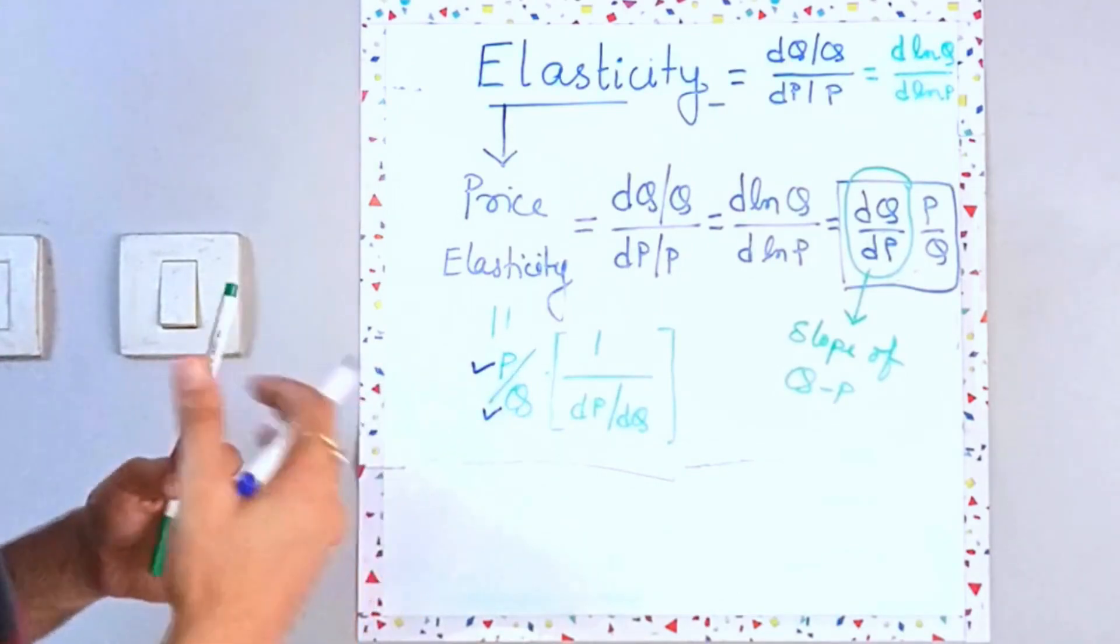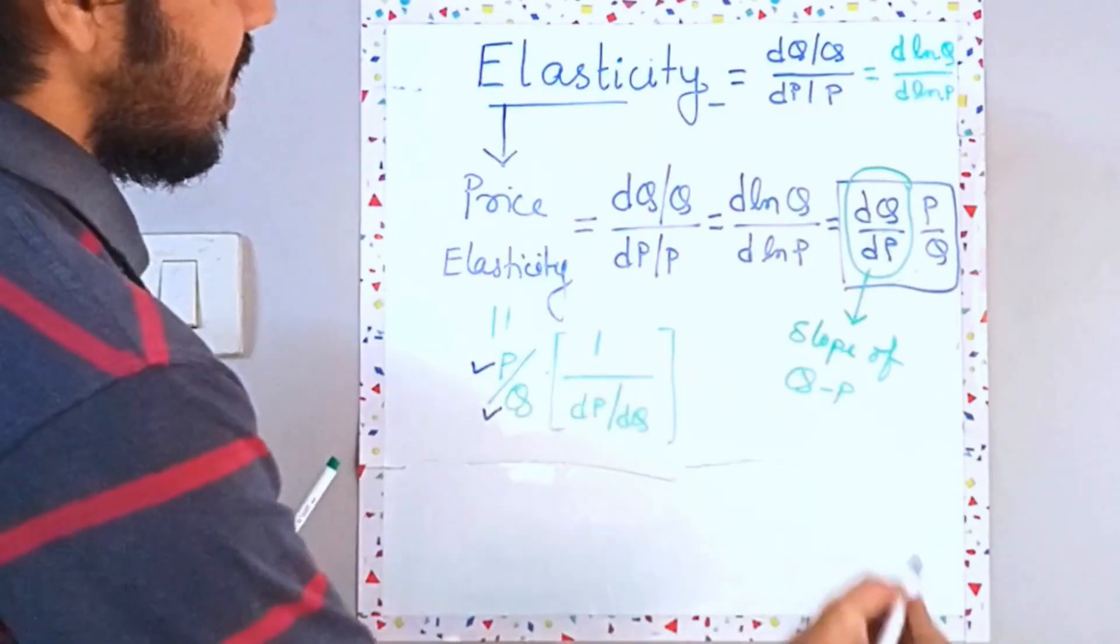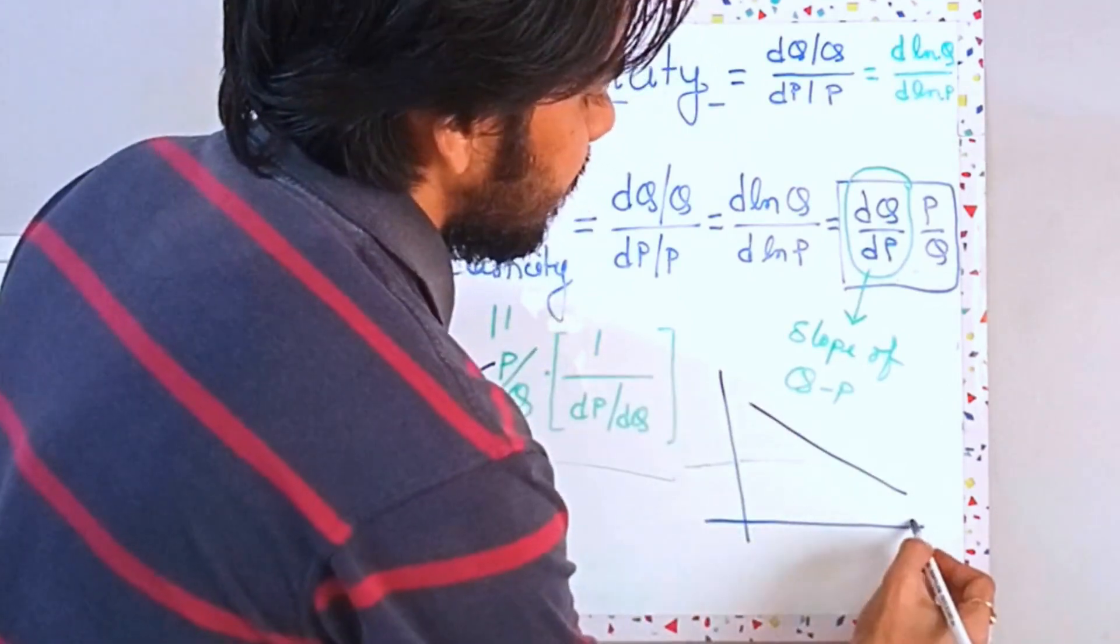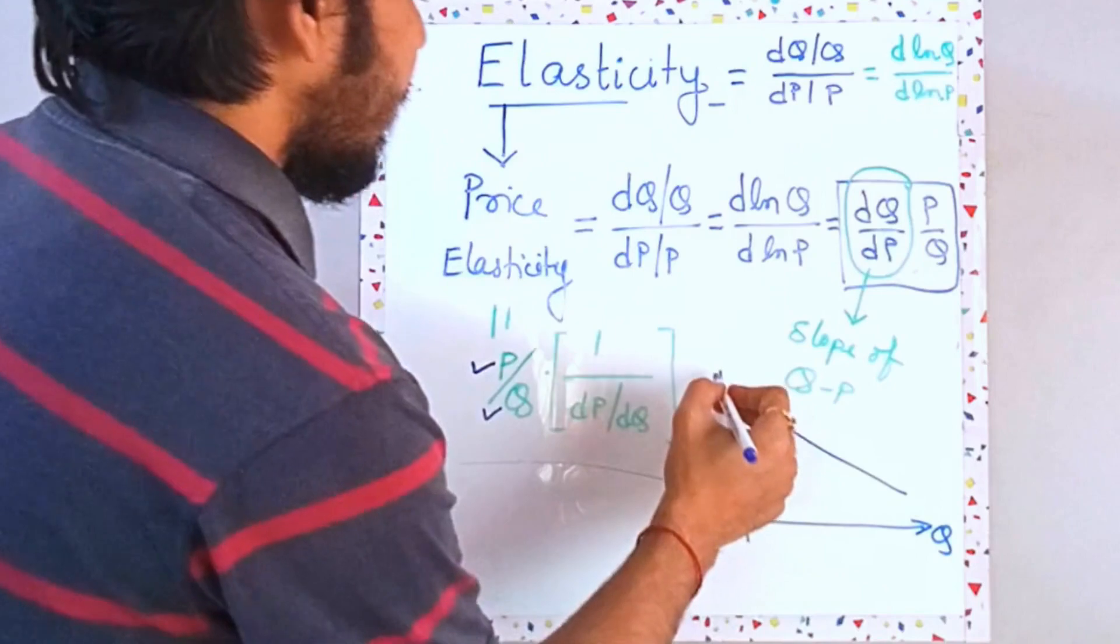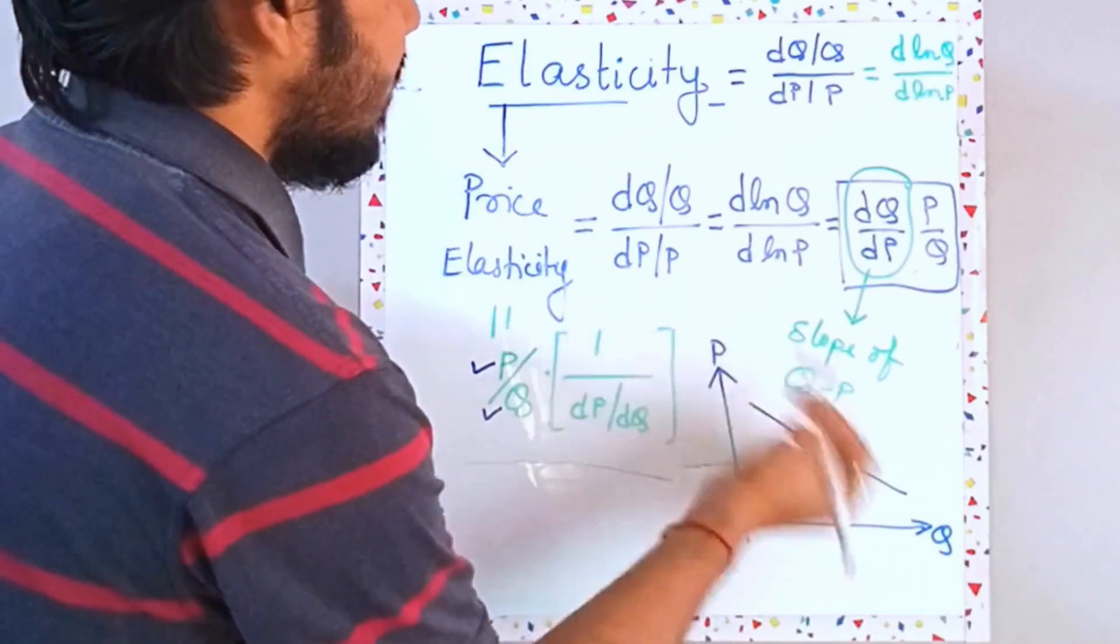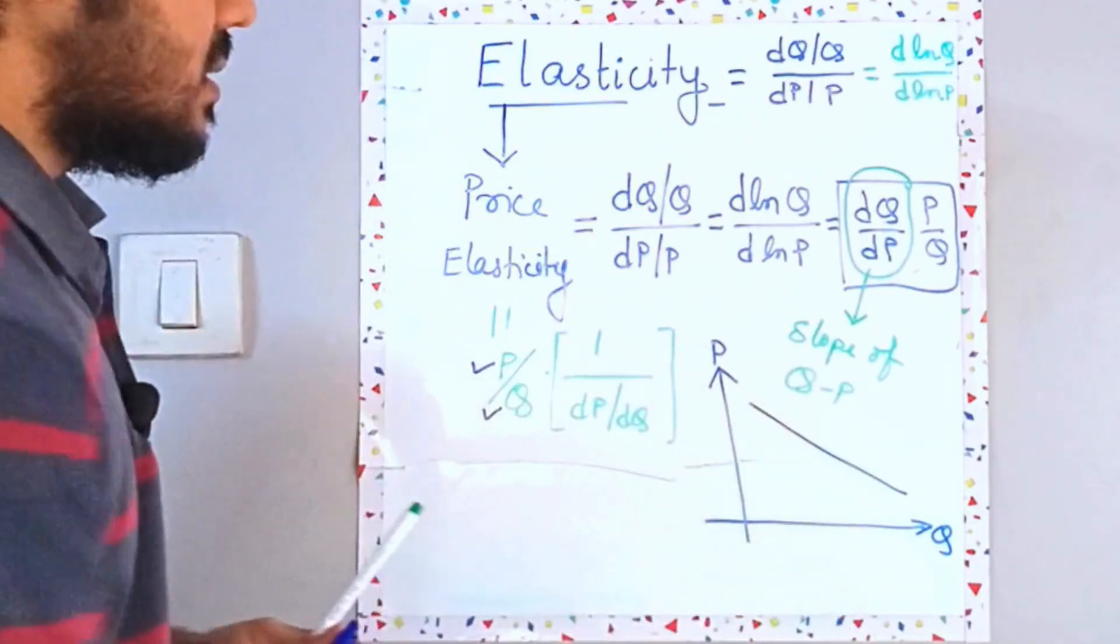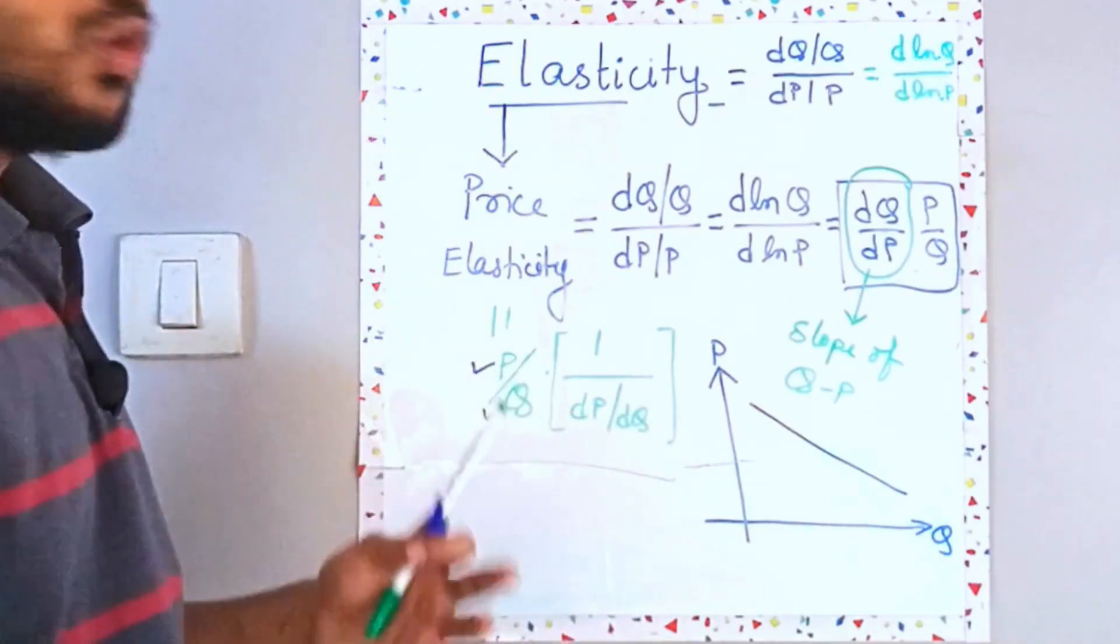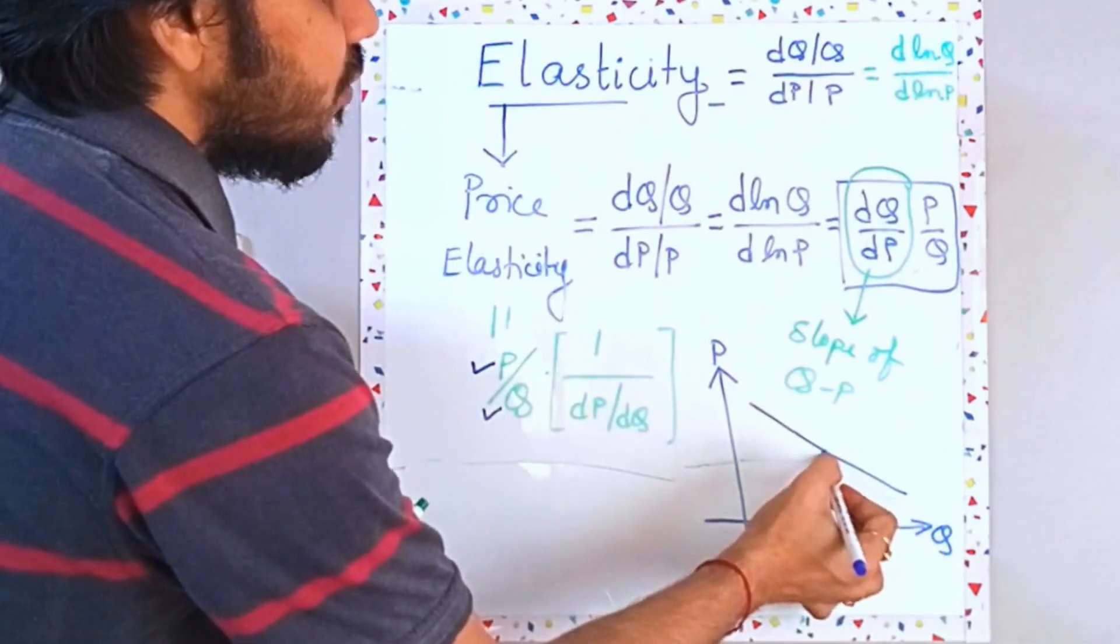So how can you denote this? So let's say you have a demand graph. This is your Q and this is your P. So you can calculate the slope very easily at all the points. So put the slope over here and you can also know the PQ values from this graph.